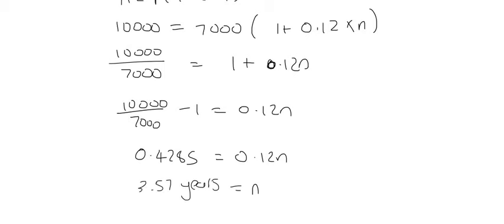And then you can divide by 0.12 and you'll get a final answer of 3.57 years. So, it's going to take Andrew 3.57 years for his money to grow from 7,000 to 10,000 Rand.